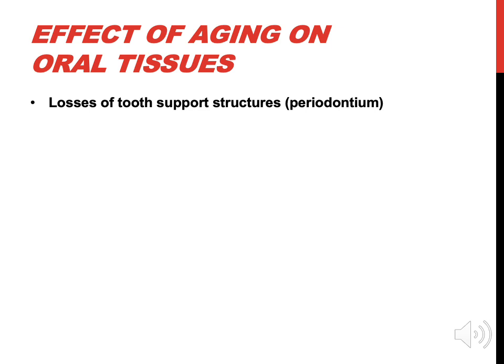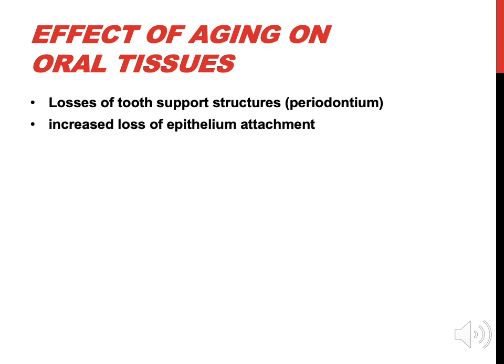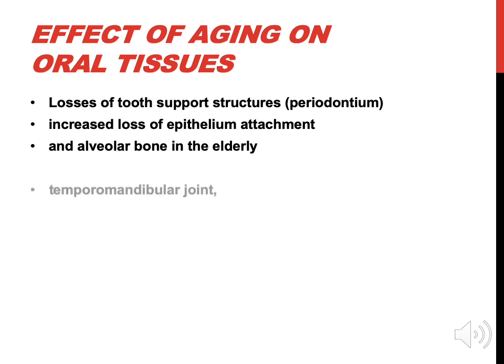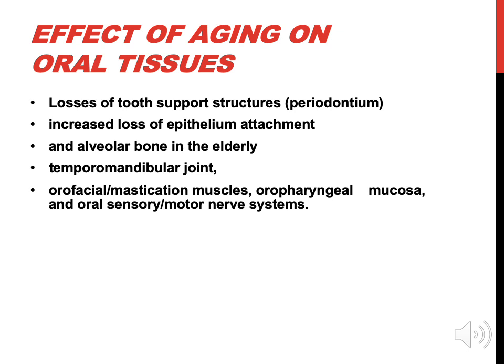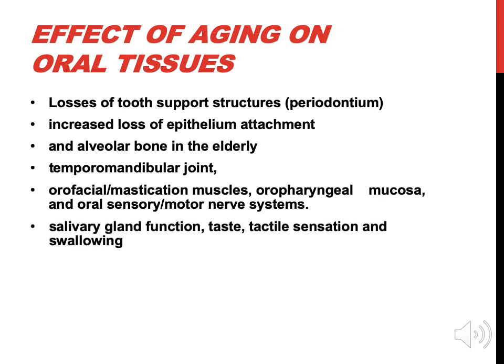Effect of aging on oral tissues: losses of tooth support structures and periodontium, including increased loss of epithelium attachment and alveolar bone in the elderly. Also affected are the temporomandibular joint, orofacial mastication muscles, oropharyngeal mucosa and oral sensory or motor nerve systems, salivary gland function, tactile sensation, and swallowing.